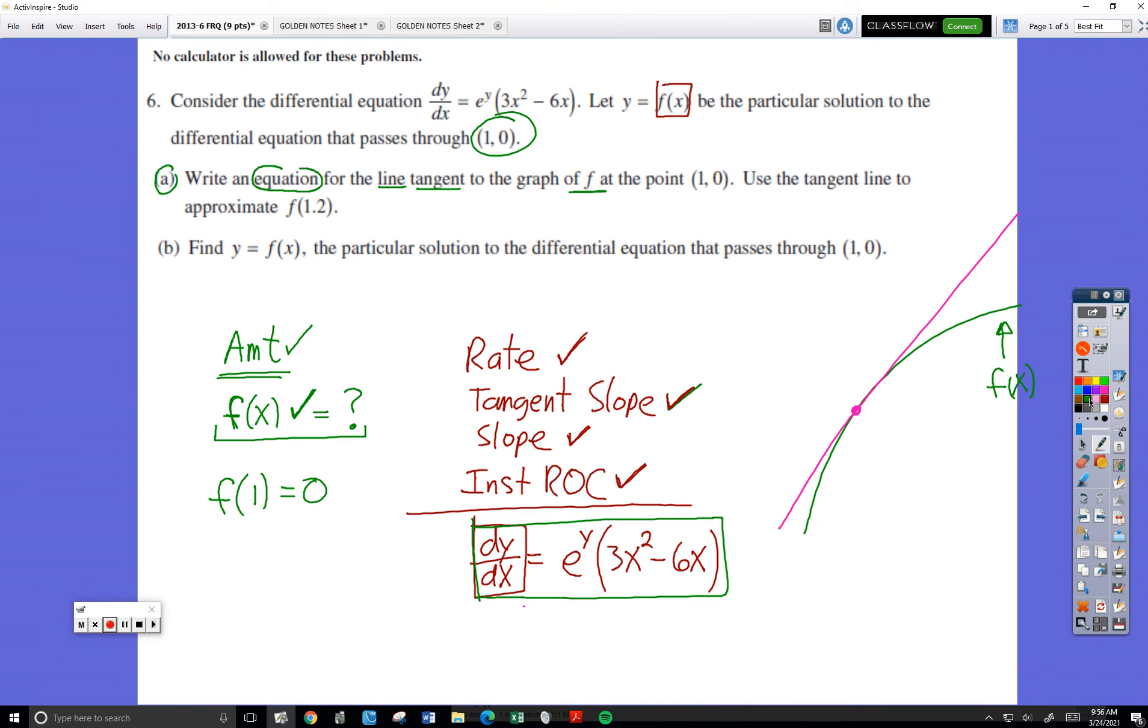So now we know this point right here on f is 1, 0. We're trying to write an equation of this line. This line is not f prime. This line is a completely separate equation, which you have to memorize. That's what they're asking right here. Write an equation of a line tangent to the graph of f at the point 1, 0. I want to do that first.